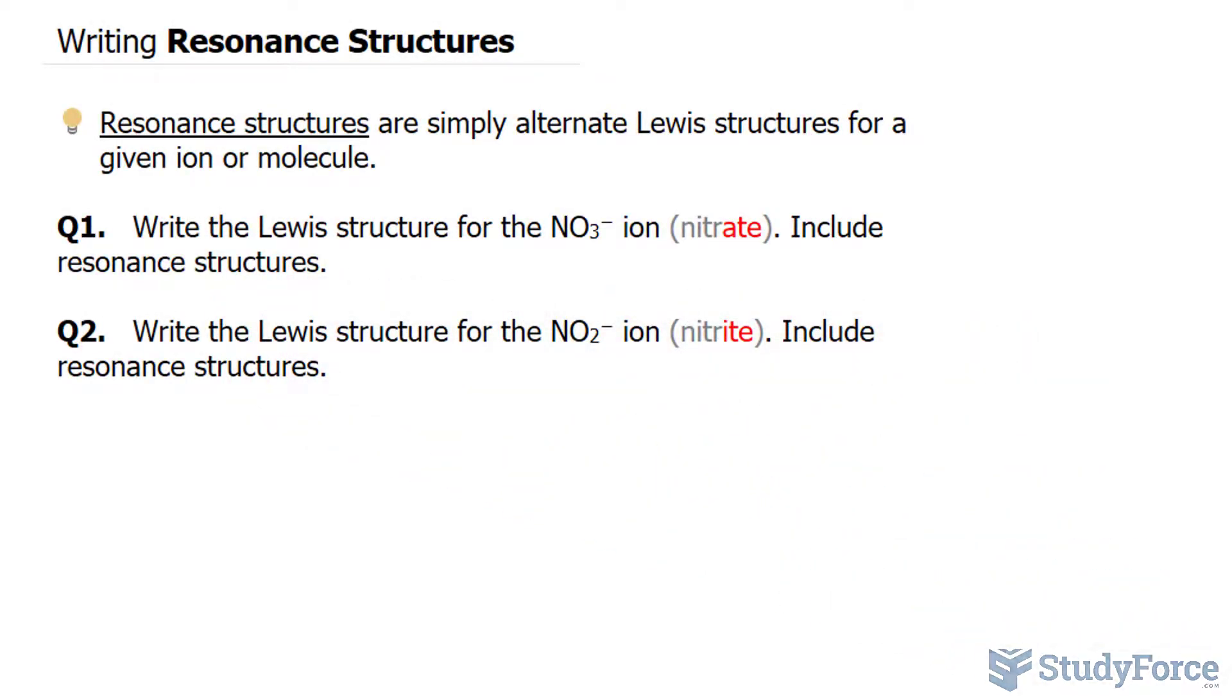In this lesson, I'll show you two examples on how to write resonance structures. A resonance structure is simply an alternate Lewis structure for a given ion or molecule.